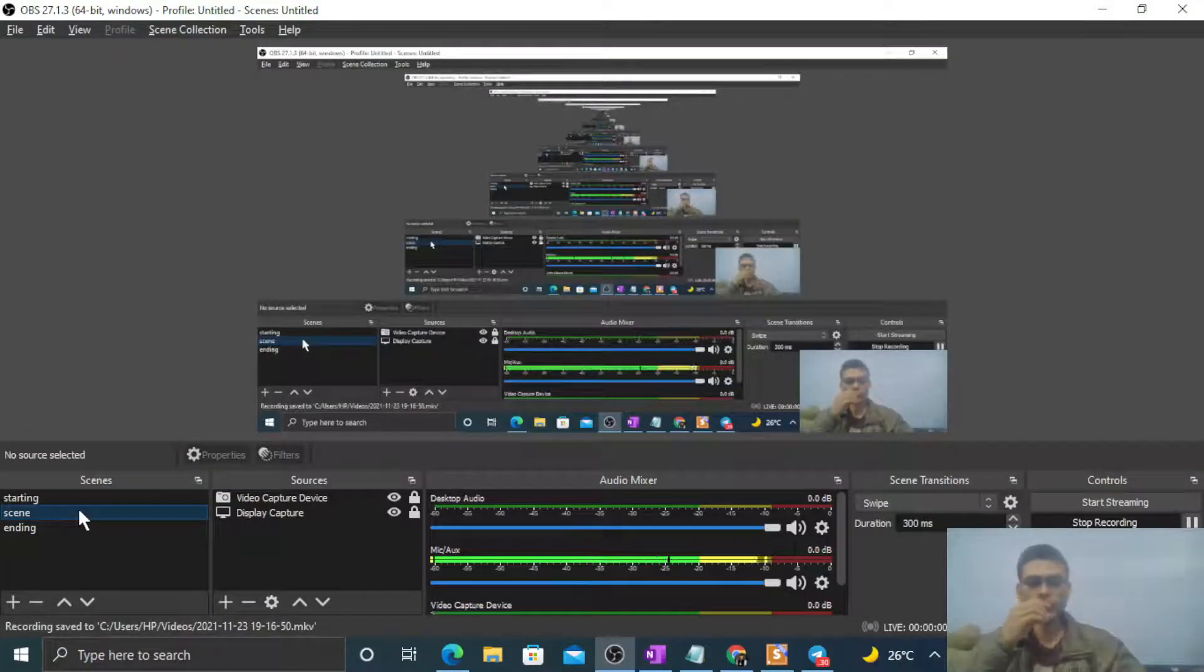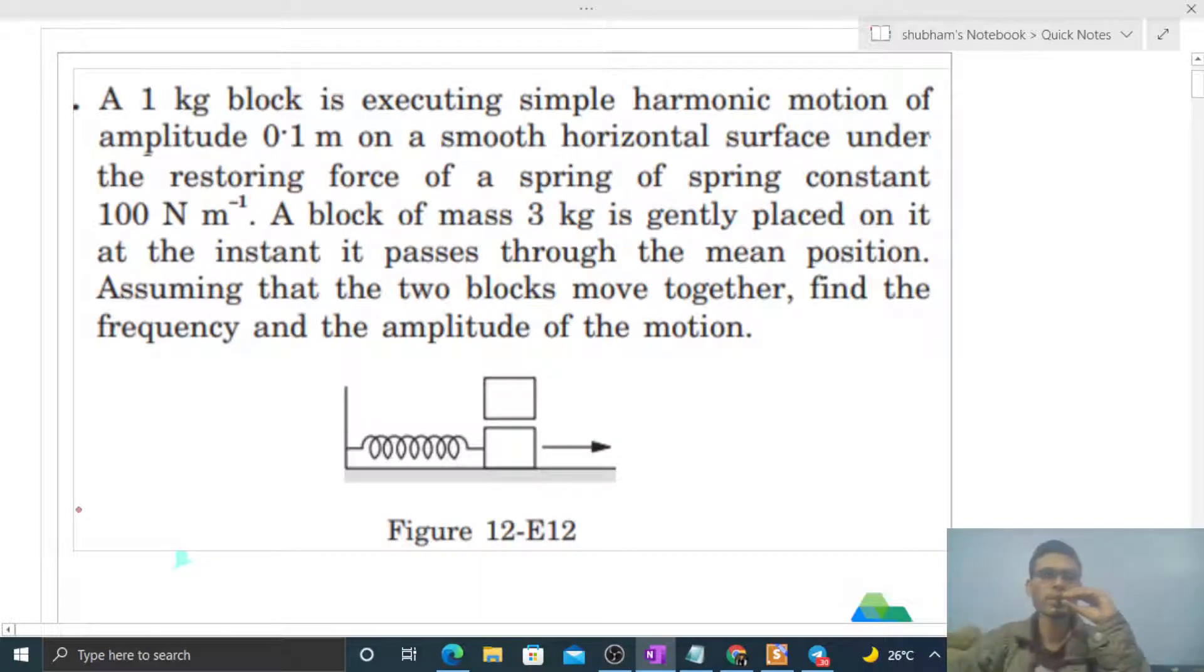Okay, hi everyone. Today let's discuss this interesting problem. It says a 1 kilogram block is executing simple harmonic motion of amplitude 0.1 meter on a smooth horizontal surface under the restoring force of a spring of spring constant 100 Newton per meter.